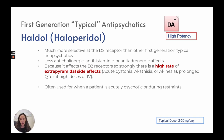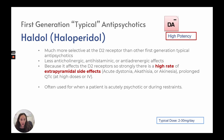Haldol is a high-potency first-generation typical antipsychotic that mostly affects dopamine. It is much more selective at the D2 receptor than other first-generation antipsychotics, with less anticholinergic, antihistaminic, and anti-adrenergic effects. Because it affects the D2 receptor strongly, there is a high rate of extrapyramidal side effects including acute dystonias, akathisia, and akinesia. It prolongs the QTc interval at high doses or IV. It is often used when a patient is acutely psychotic or during restraints. Typical dose is 2 to 30 milligrams per day.